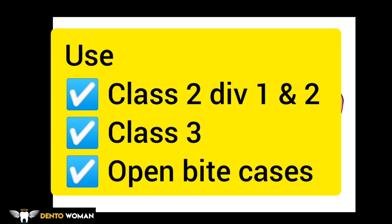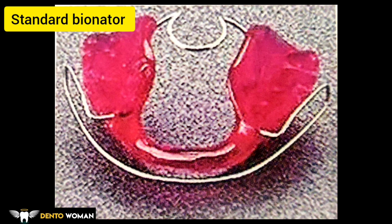The activator is used for class 2 div 1 and div 2 malocclusion corrections, and also for class 3 malocclusions and open bite malocclusion. This next image shows the standard bionator appliance. There are three types of bionators: standard appliance, class 3 appliance, and the open bite appliance.